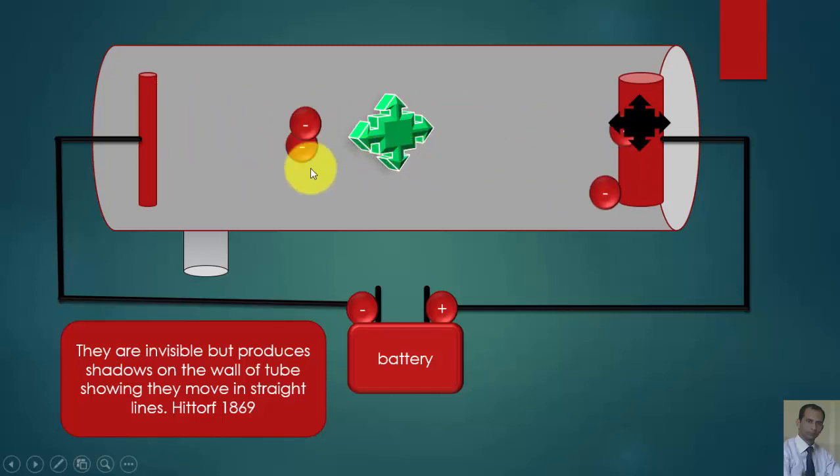These radiations are invisible, but when a wheel is placed in their path and these radiations are made visible through the excitation of gases, then they cast a shadow on the wall of this tube.